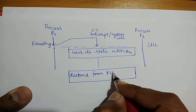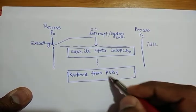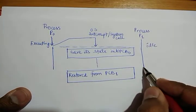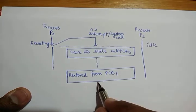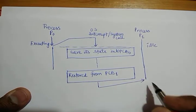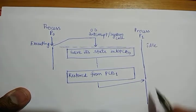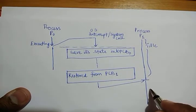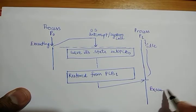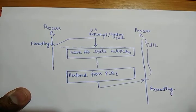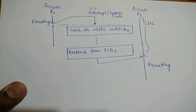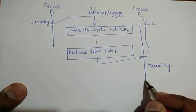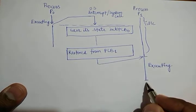After P0 saves its state, whatever was the state stored in PCB1 will be restored from PCB1 — the process control block for P1. As it is restored, P1 starts executing. Till now P1 was idle, and from this point onwards it will start executing.